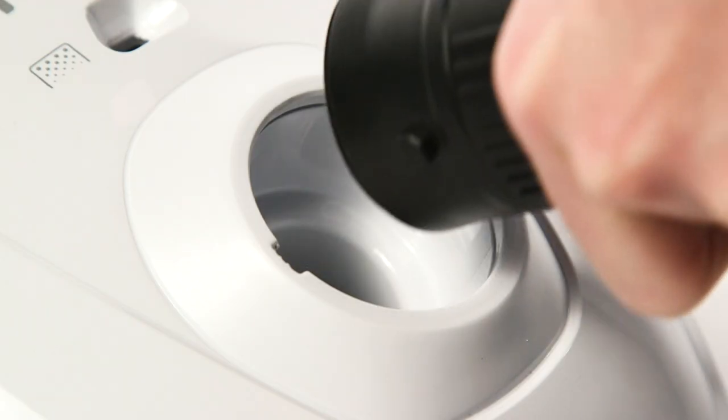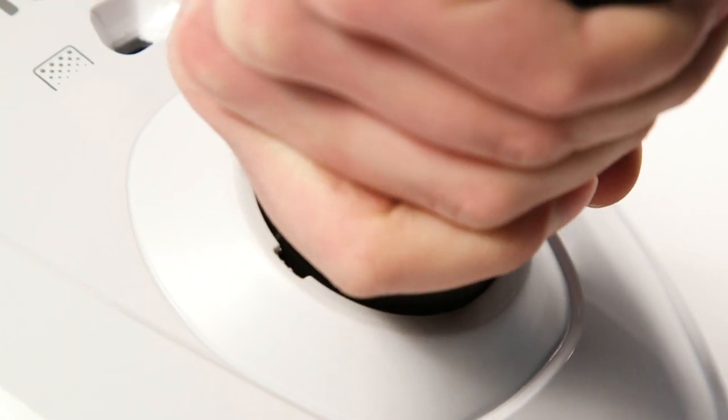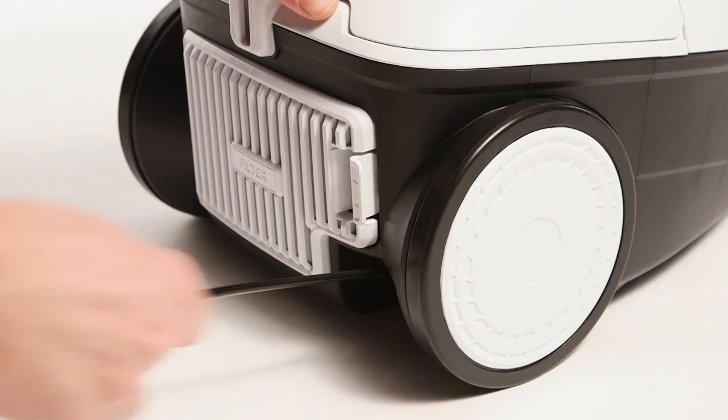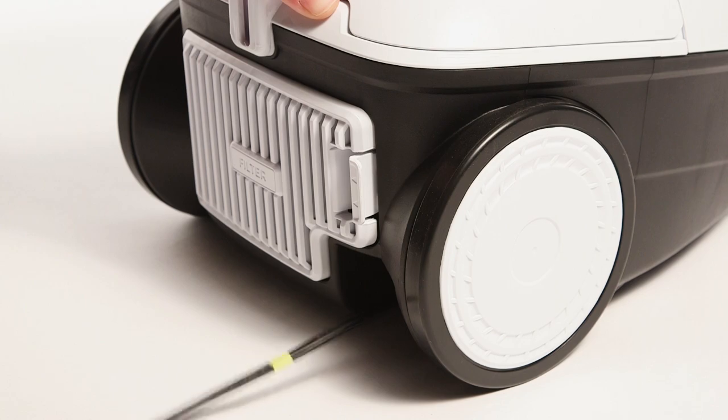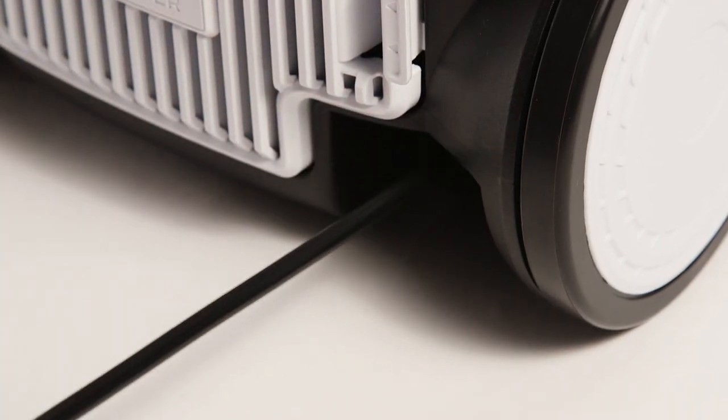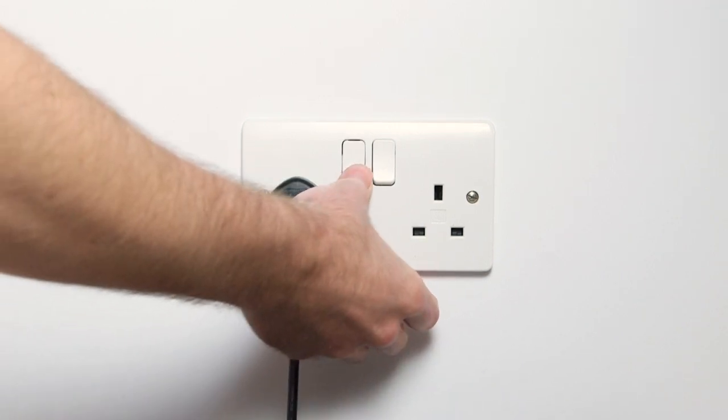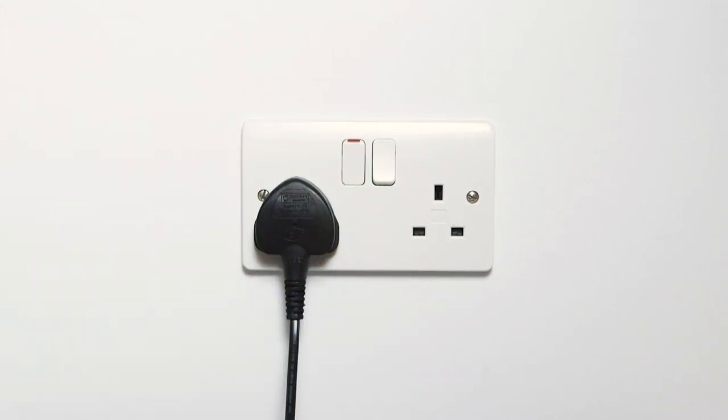Insert the flexible hose coupling into the hose socket. To use the vacuum, pull out the cable until the yellow mark is visible. Ensure you do not extend the cable past the red mark. Plug the vacuum into the mains supply and press the on-off button to switch the vacuum on.